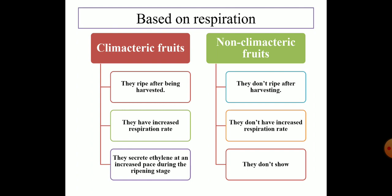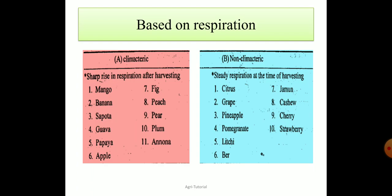There is a sharp rise in respiration just after harvesting in climacteric fruits. Examples in this category include: mango, banana, sapota, guava, papaya, apple, fig, peach, pear, plum, and annona. For non-climacteric fruits, there is steady respiration at the time of harvesting. Examples include citrus, grapes, pineapple, and pomegranate.